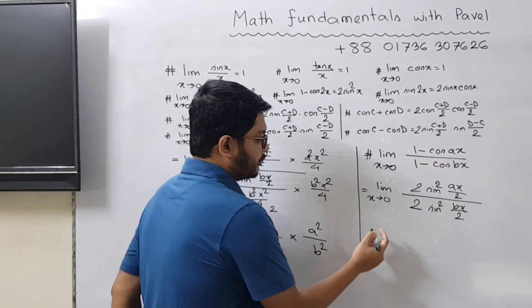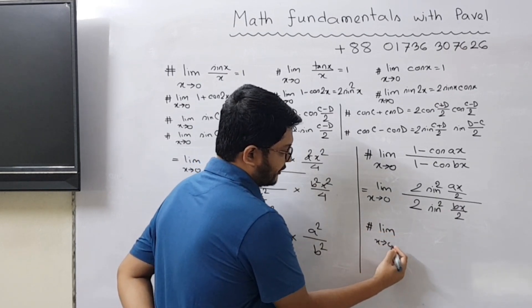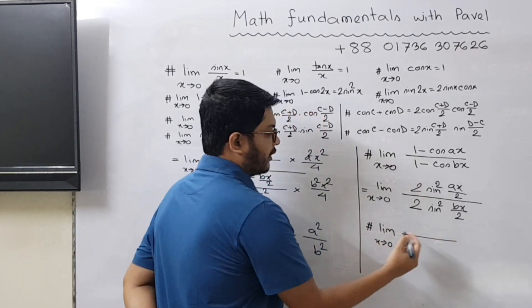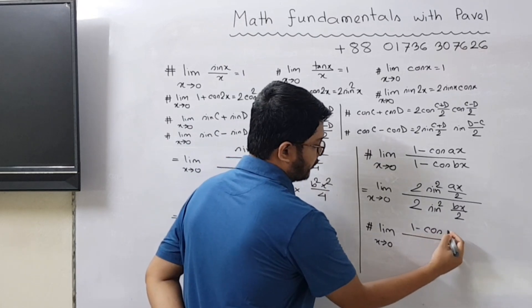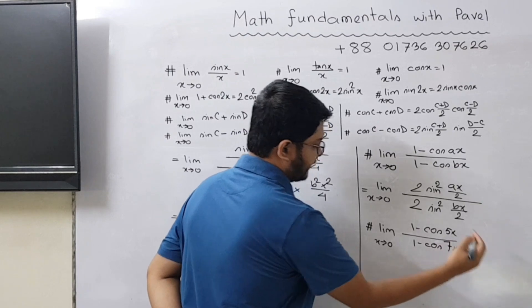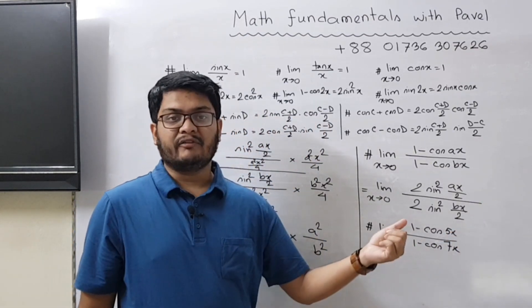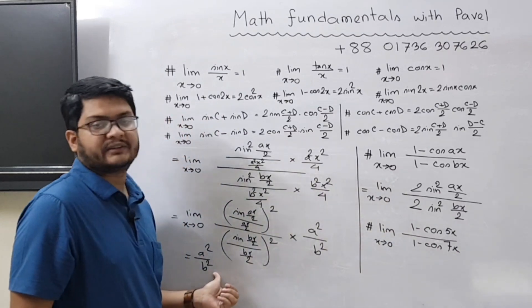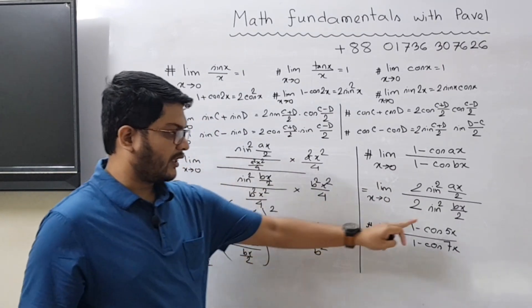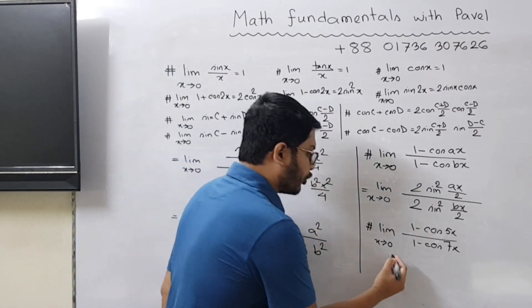So if I give you some question like this: limit x tends to 0, (1 - cos 5x) / (1 - cos 7x), you can directly find out the answer using this concept. So it would be 5² / 7², so it would be 25 / 49.